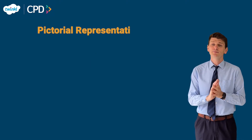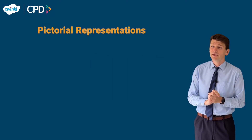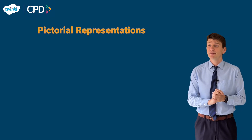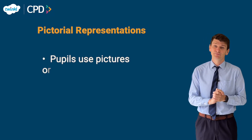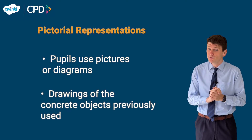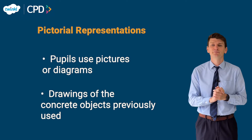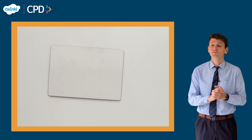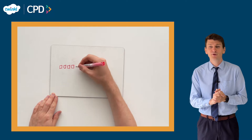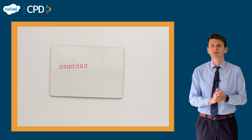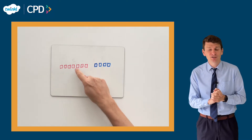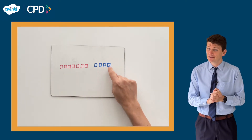When pupils are comfortable solving problems using real-life objects and manipulatives, they can begin to relate to the concept by using pictorial representations. This often involves pupils using pictures or diagrams of the concrete objects they were previously using. For example, pupils could draw seven red cubes and four blue cubes before counting up the total. Pictorial representations are a great way to link concrete representations to abstract representations.